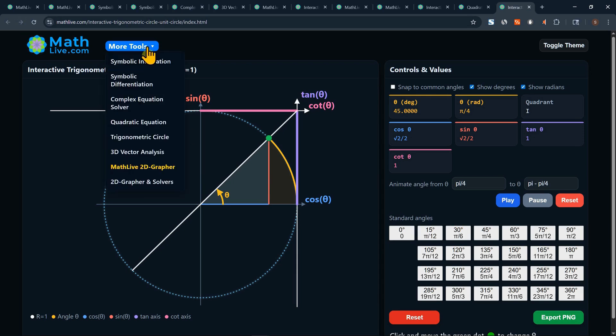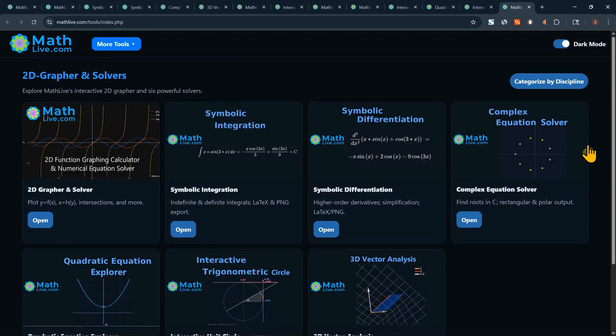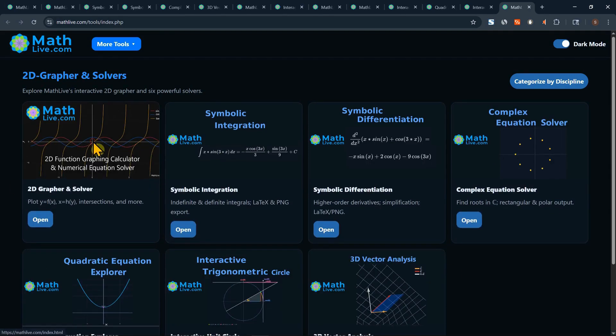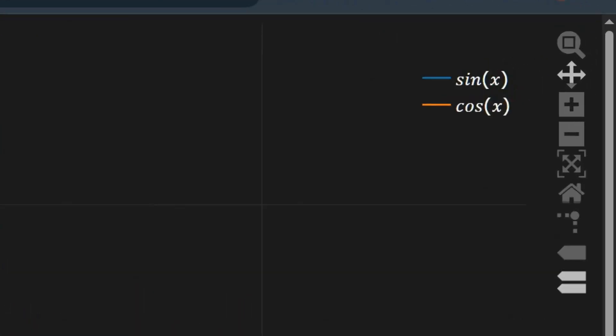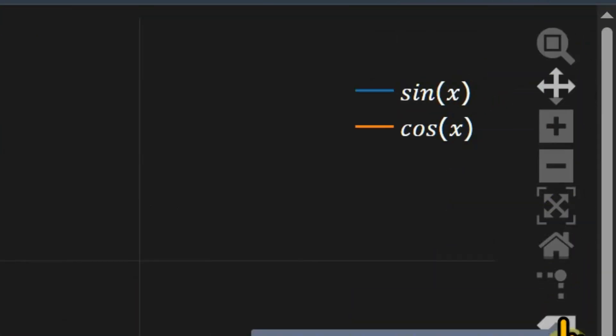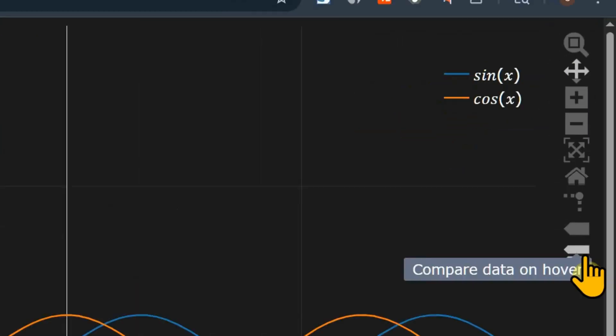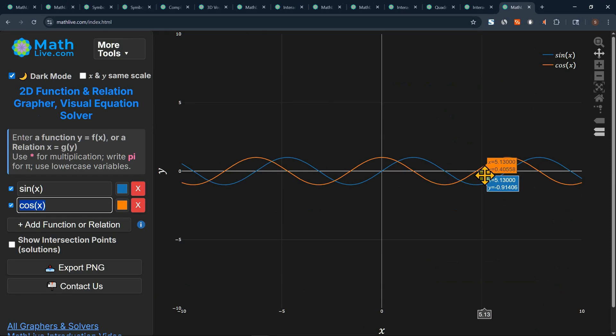If you want to see all the tools we have again we could go to the 2D grapher. And those are all the solvers. And this is the 2D graph. Let's go back to the grapher. And as you see here we have 2 functions. Sine x and cosine x. On the top right we have the toolbar. And we show the toolbar and we show the sine and cosine x on the canvas.